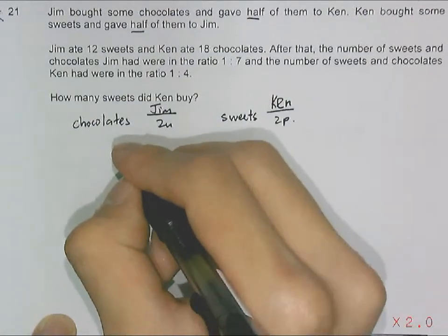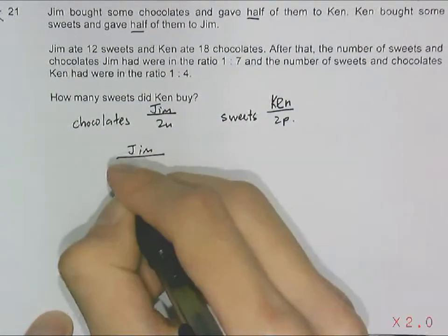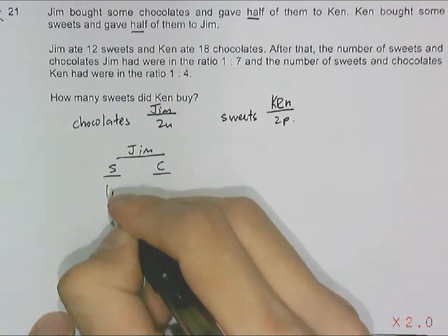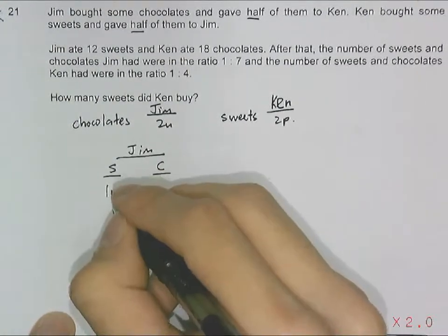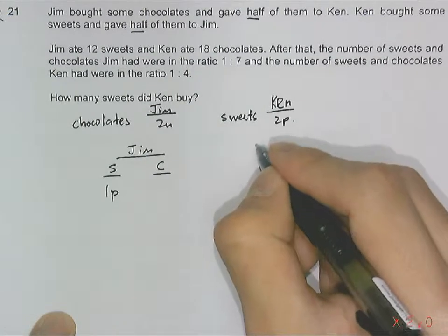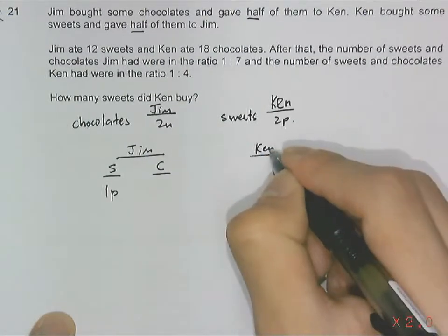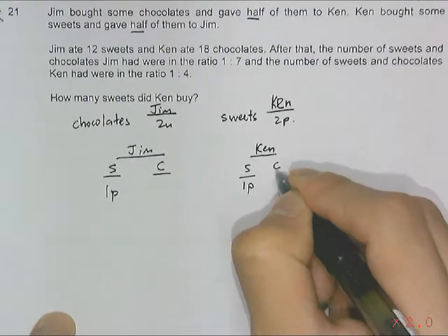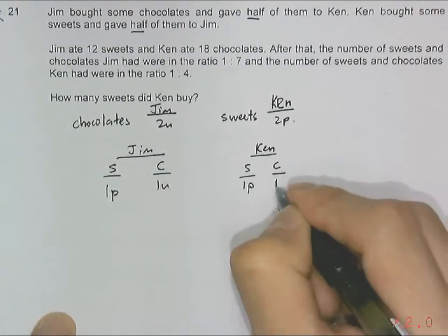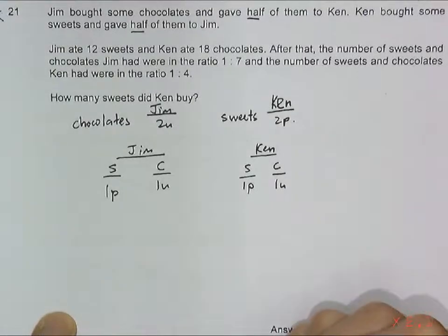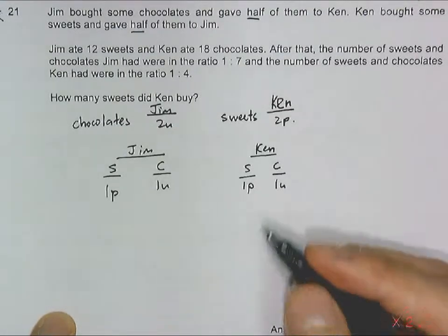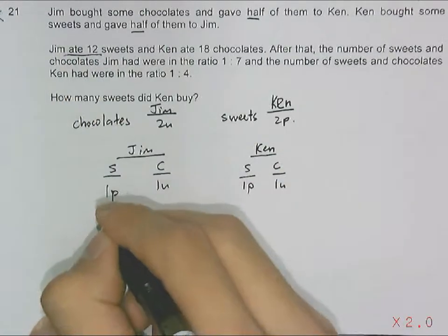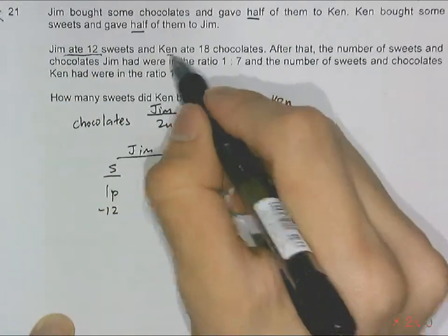Each of them started off with the same number of sweets and chocolates. So each of them starts with 1 part of sweets and 1 unit of chocolate. It's given that Jim ate 12 sweets and Ken ate 18 chocolates.